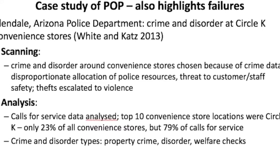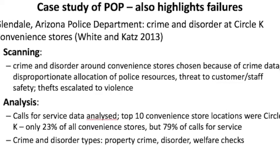The analysis process found that when they looked at the calls for service data, the top 10 convenience store locations were definitely Circle K, which is why they focused specifically on that brand of convenience store. Circle K made up only 23% of all convenience stores at that particular time, but they constituted 79% of calls for service — which is mind-blowing considering they only make up 23% of all convenience stores. They found crime and disorder types typically were property crime generally, and things like welfare checks as well — they were called out constantly to do welfare checks on people hanging out outside the store.